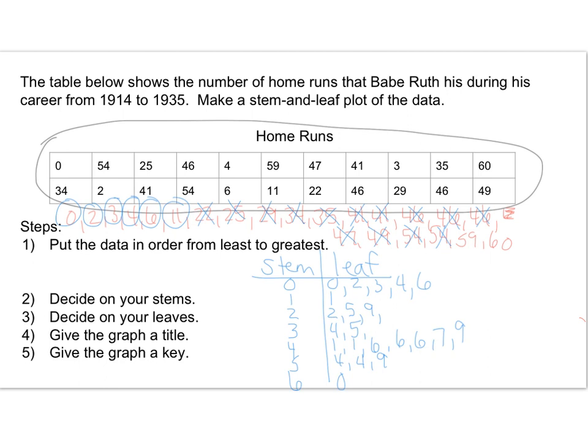Go ahead and check your stem-and-leaf plot compared to my stem-and-leaf plot. We've put our data in order, decided our stems and our leaves. Now we have to give our graph a title. I have to write it over here because I'm low on space: Babe Ruth Home Runs. Finally, we need a key. A key just tells me how to read the stem-and-leaf plot. I just pick one of my numbers, like 4|1, and that means that there are 41 home runs.